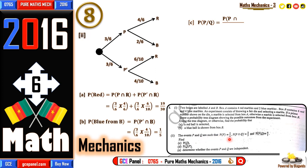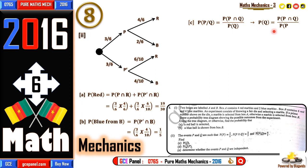Now for part two: events P and Q are such that the probability of P equals two on five, probability of P intersection Q equals two on seven, and probability of P given Q equals four on seven. We know that P(P|Q) = P(P ∩ Q) / P(Q). Making P(Q) the subject: P(Q) = P(P ∩ Q) / P(P|Q) = (two over seven) divided by (four over seven), which gives two over four, equal to one half.